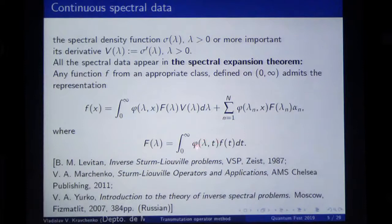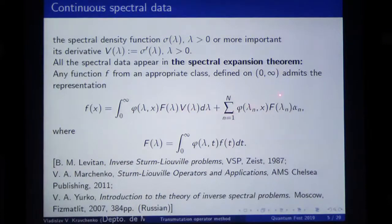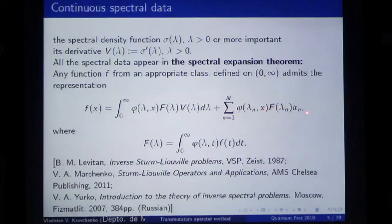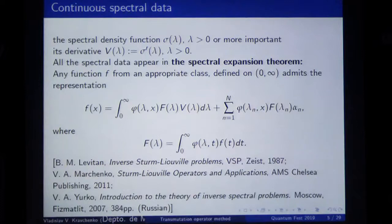F-hat of lambda is the image of the function F under the generalized Fourier transform. We take our solution of the Cauchy problem, consider this integral with function F, and obtain some image — this is the generalized Fourier transform. Here is how to invert this generalized Fourier transform. If the discrete spectrum is not empty, it is represented by this part, with the solution of the Cauchy problem corresponding to every eigenvalue, multiplied by the values of F-hat and the norming constants.